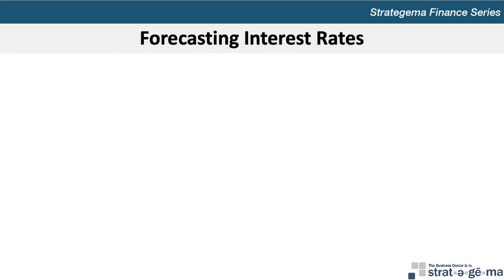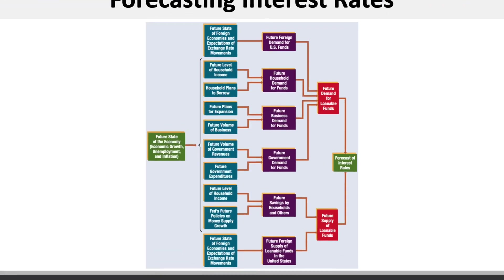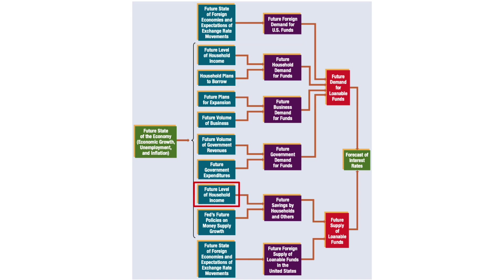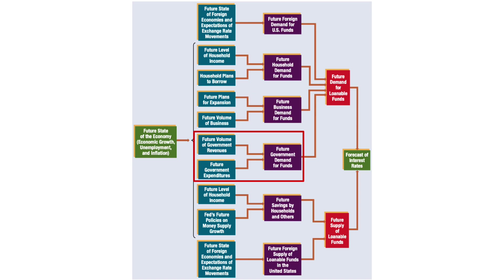Now let's discuss the forecasting of interest rates. This exhibit summarizes the key factors that are evaluated when forecasting interest rates. With an understanding of how each factor affects interest rates, it becomes possible to forecast how interest rates may change in the future. When forecasting household demand for loanable funds, it may be necessary to assess consumer credit data to determine borrowing capacity. Business demand can be forecasted by assessing future plans for corporate expansion and the current state of the economy. Federal government demand could be influenced by the economy's future state, as it affects both tax revenues received and unemployment compensation paid out — factors that both affect the size of the government deficit.